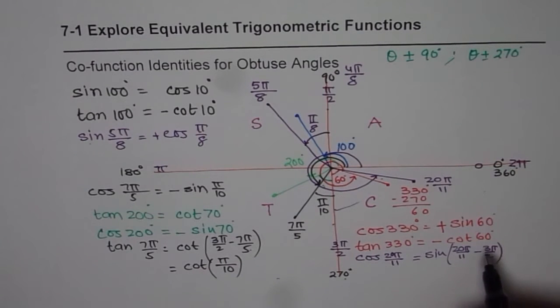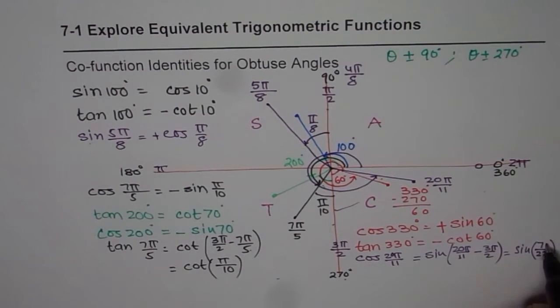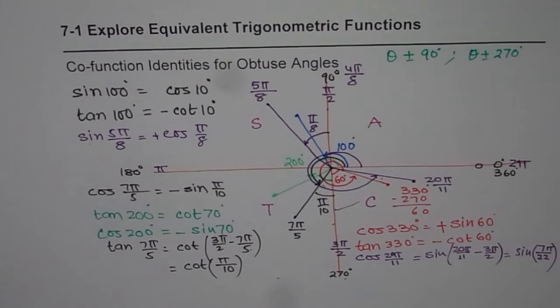So which gives you, in this case, sine of denominators 11 times 2, which is 22. And here, when you multiply 2 times 20 is 40. 40 take away 33 gives you 7. Is that okay? So you get sine 7 pi by 22 as your answer.